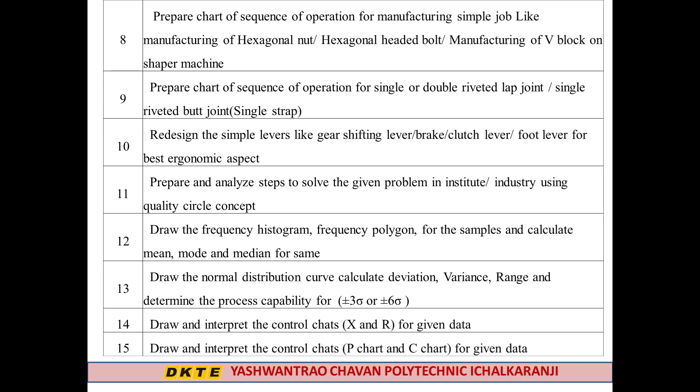The twelfth experiment is to draw the frequency histogram and frequency polygon for samples and calculate mean, mode, and median. The thirteenth experiment is to draw the normal distribution curve, calculate deviation, variance, and range, and determine process capability for three sigma or six sigma. The fourteenth and fifteenth experiments are to draw and interpret control charts like X-Bar and R-Bar for given data, and P Chart and C Chart for given data.